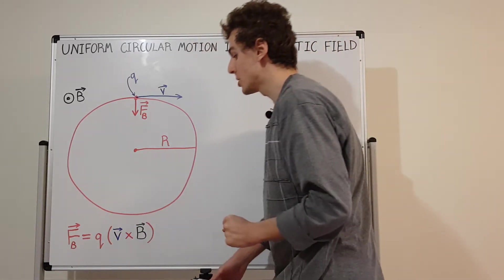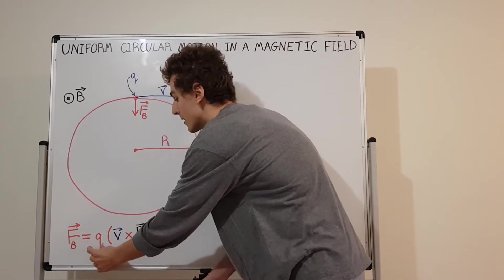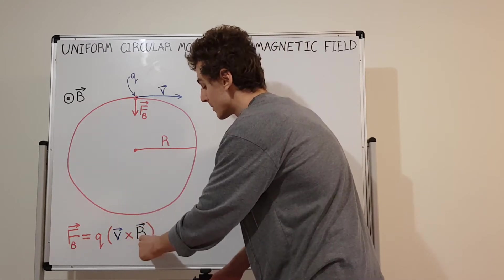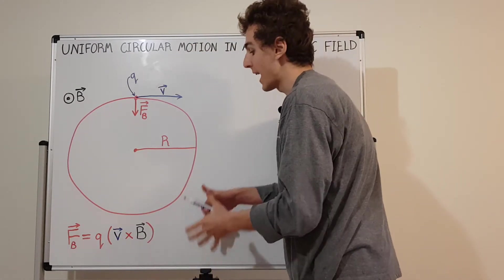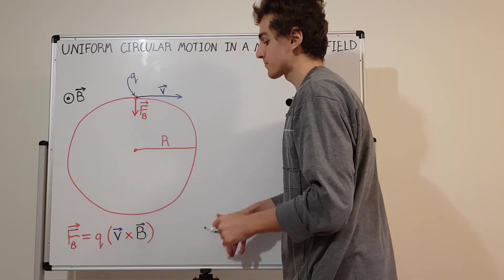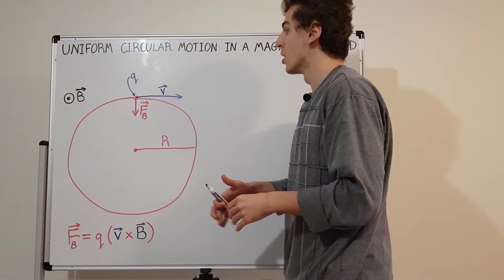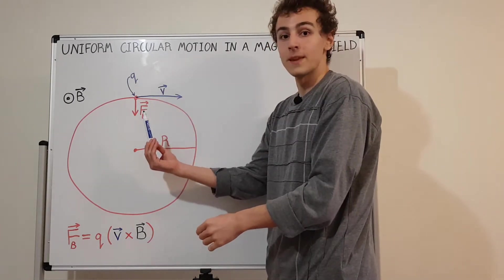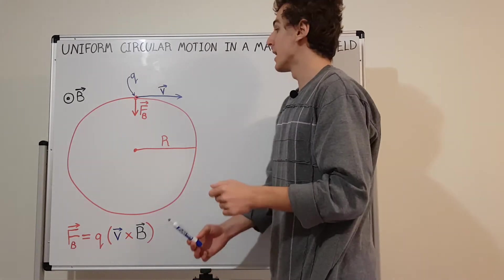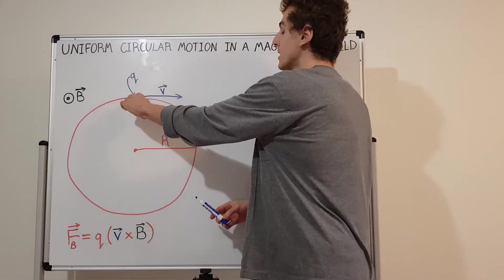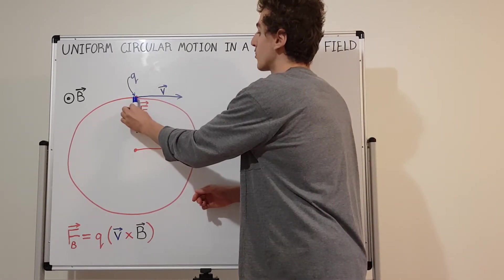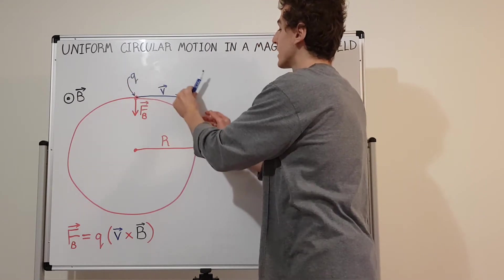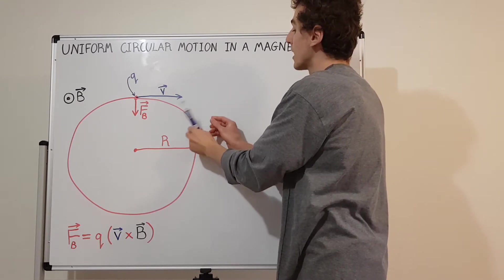Why is that the case? Let's have a look at this equation. We're multiplying the charge Q by the cross product of the velocity and the magnetic field. When you take the cross product, the result has to be perpendicular to both of these vectors. The only direction it could be is either down or up — it has to be in the plane. It has to be perpendicular to velocity, so it either points downwards or upwards. As you move along the circle, it points either outwards away from the circle or inwards.